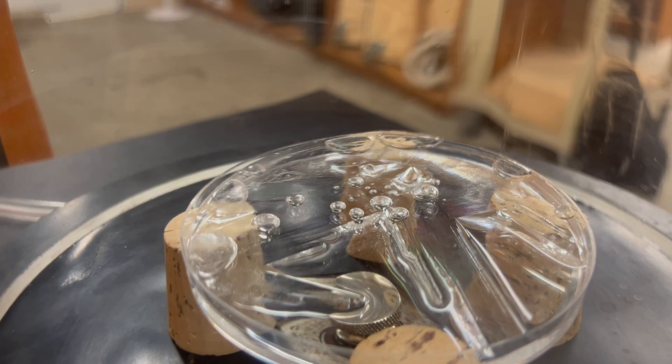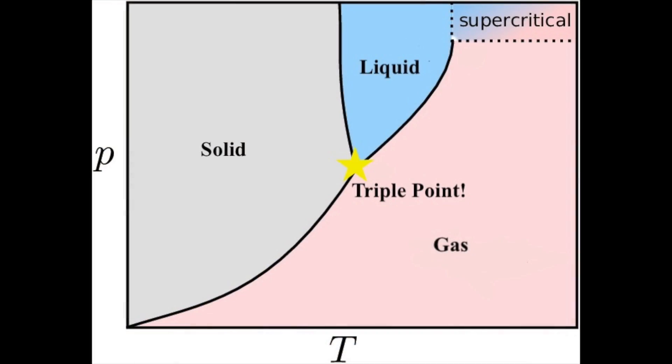The condition in which all three phases can coexist, which you can see here, is what the scientific community calls the triple point. Thank you all for watching, and I hope you now understand the phenomenon we call triple point.